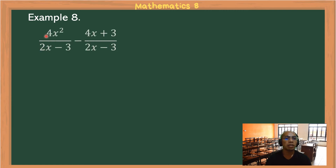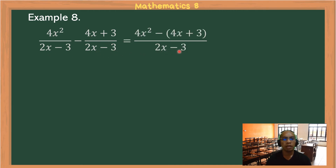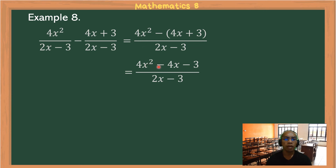Example 8: 4x²/(2x−3) − (4x+3)/(2x−3). Copy the common denominator. Subtracting the numerators: 4x² − (4x+3) — since we are subtracting a binomial, we distribute the negative sign, giving 4x² − 4x − 3. Our numerator is a quadratic trinomial where the coefficient of x² is greater than 1, so we use the AC method to factor.